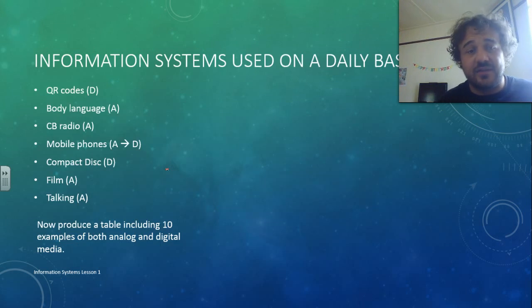Alright. So, we use a bunch of these on a daily basis. The D means it's digital, and the A means it's analog, so body language is an analog, it varies in between. QR codes, that's digital. CB radio, because it uses radio waves, that's an analog thing. And mobile phones, they're interesting because they went from analog to digital. Compact disk, again, ones and zeros, that's a digital system, and so forth. I want you to produce a table, with ten examples of both analog and digital information systems.